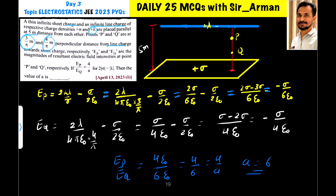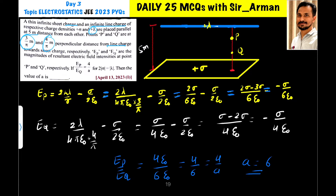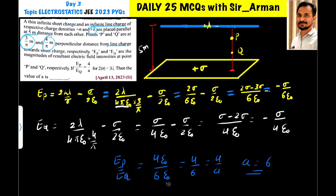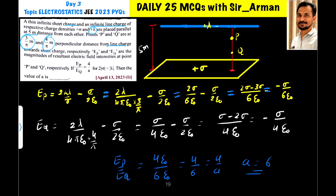At point P, the net electric field due to the line charge is 2k lambda by R and due to the plane charge is sigma by 2 epsilon naught, with opposite signs because both fields point in opposite directions. The value of R is 3 by pi and k equals 1 upon 4 pi epsilon naught, so substituting gives 2 times lambda divided by 4 pi epsilon naught times pi over 3. Pi and pi cancel, and with lambda equals 2 sigma, the lambda terms combine: 2 and 2 cancel, giving 2 sigma by 6 epsilon naught, which simplifies to sigma by 3 epsilon naught... wait, let me redo: we get 2 sigma by 6 epsilon naught as one term.